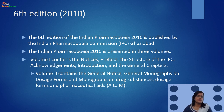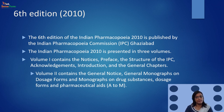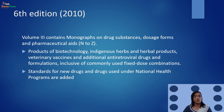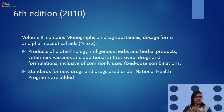The 6th edition was presented in three volumes. Volume 1 contains notices, preface, monographs, structure of IPC, acknowledgements, introduction, and general chapters. Volume 2 contains monographs from alphabet A to M. Volume 3 contains monographs from N to Z, followed by monographs on vaccines, immunosera for human use, herbs and herbal products, blood and blood products, and biotechnology-related products.